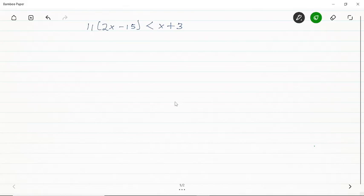What we're going to do is open the bracket by multiplying the 11 outside the bracket by everything inside. So 11 times 2x is going to give us 22x, then 11 times -15 is going to give us -165, less than x + 3.